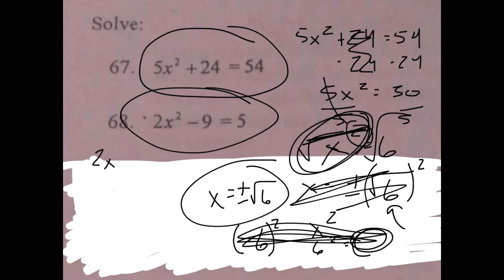Now I don't know if your teacher wanted to do completing the square or quadratic equation or anything like that. If they did, I'm showing you the easy way. So we add 9 there, add 9 there, it goes away. 2x² = 14. Divide by 2 on both sides.